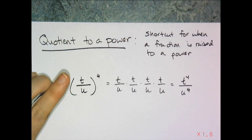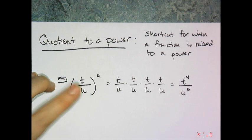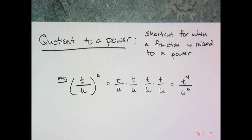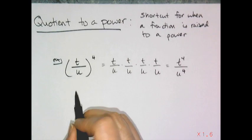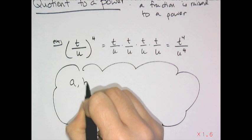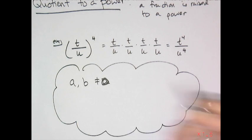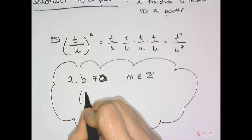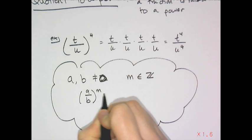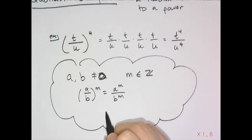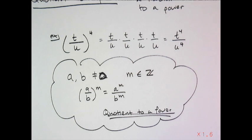This is just like product to a power, except using division. You cannot have addition or subtraction inside the parentheses — only bases multiplied or divided. The rule: a and b cannot equal 0, and if a over b is raised to the nth power, that equals a to the n over b to the n.